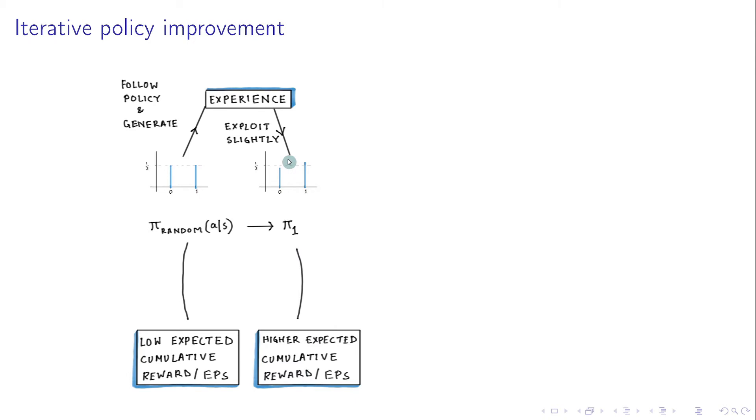The crucial thing is that the new policy should differ only slightly from the previous policy. So here we show the new policy for a particular state S. And as you can see, it's not that different from the random policy. The probability of taking action 1 in this state is only slightly higher than half.